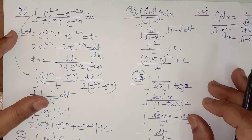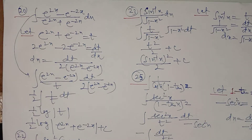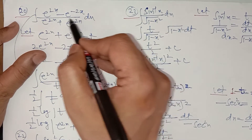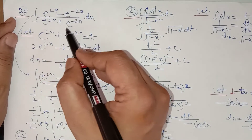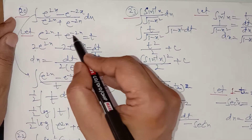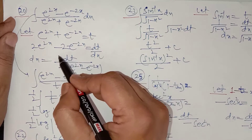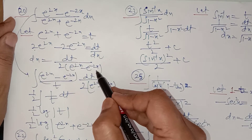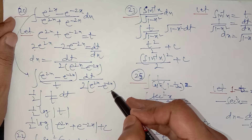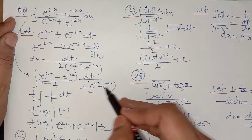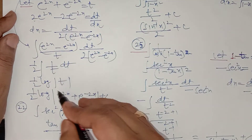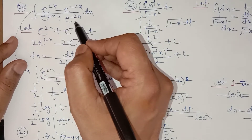Question number 20 is similar to question number 18. You simply let e to the power 2x plus e to the power minus 2x equal to t, because its derivative is the numerator. So dt upon dx equals e to the power 2x times 2 minus e to the power minus 2x times 2, and dx equals dt upon 2(e to the power 2x minus e to the power minus 2x). Replace the value of dx; this cancels the numerator, leaving 1 upon t, whose integration is log mod t. Replace t with e to the power 2x plus e to the power minus 2x.